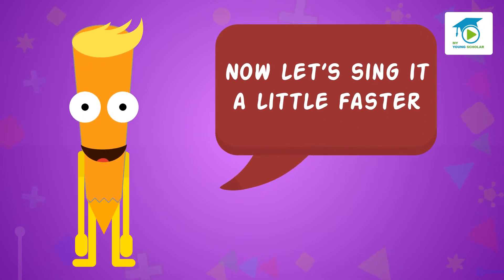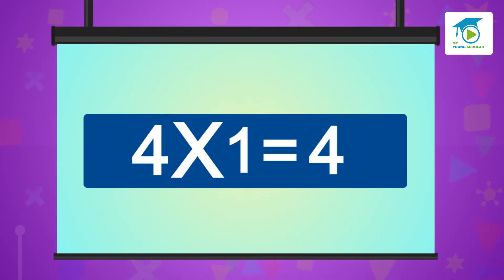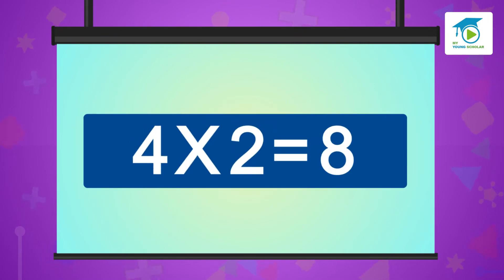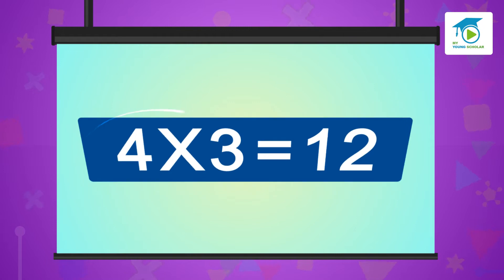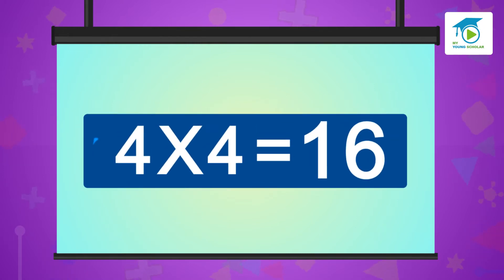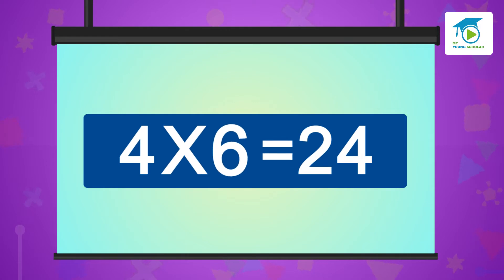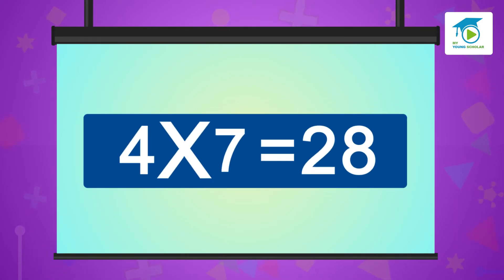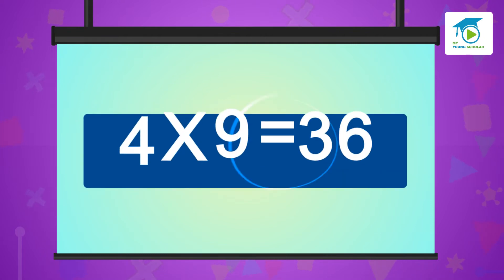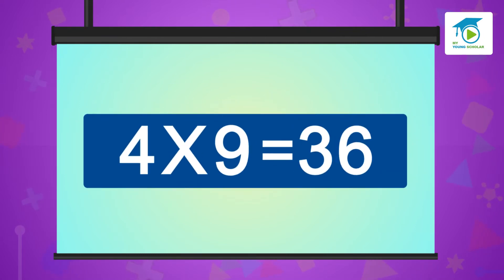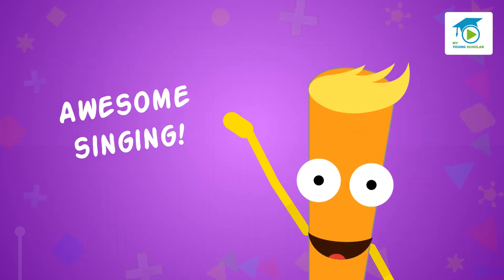Now let's sing a little faster. Four ones are four, four twos are eight, four threes are twelve, four fours are sixteen, four fives are twenty, four sixes are twenty-four, four sevens are twenty-eight, four eights are thirty-two, four nines are thirty-six, four tens are forty. Awesome singing!